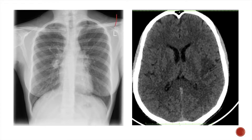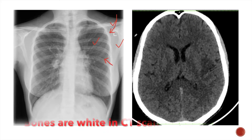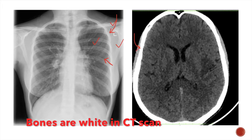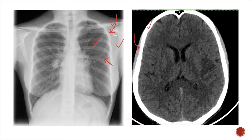If you look at this image, you can see that the bones are white in the X-ray. The ribs are white, the clavicle is white, the scapula is white, but the lungs are dark. Similarly, in the CT scan, the bones are white. This is the skull bone and it appears white in the CT scan.